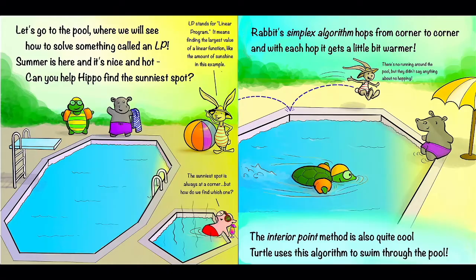Rabbit's simplex algorithm hops from corner to corner, and with each hop it gets a little bit warmer. So here goes Rabbit. Rabbit says there's no running around the pool, but they didn't say anything about no hopping. Meanwhile, the interior point method is also quite cool. Turtle uses this algorithm to swim through the pool. And we can see that Hippo here has already found the sunniest spot.